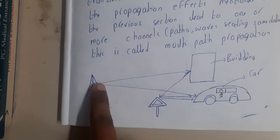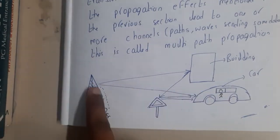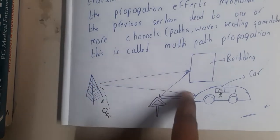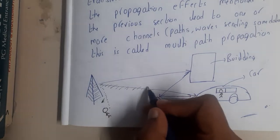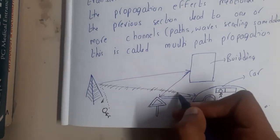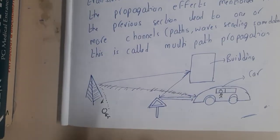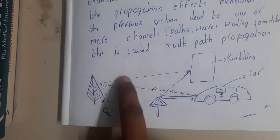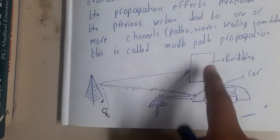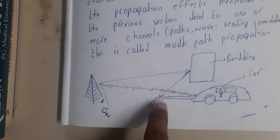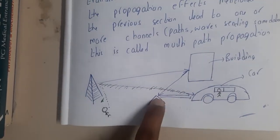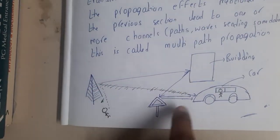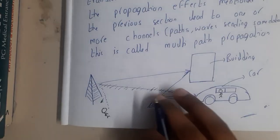While the tower is sending, assume the direct path is not available — that should be the direct path to send the signal, but unfortunately it wasn't able to send that way. So it sent in a particular direction, which reflected off a building, and that building reflected it back to a roadside symbol, where scattering occurred and the signal was received by the user.